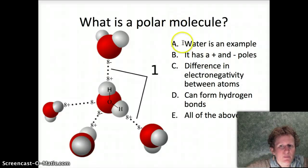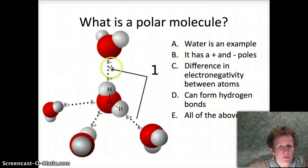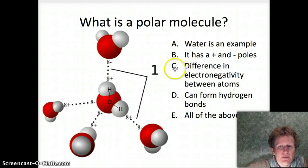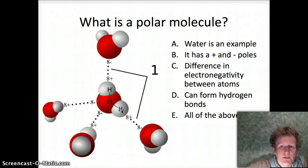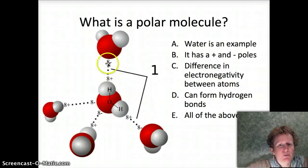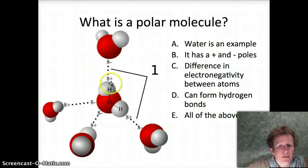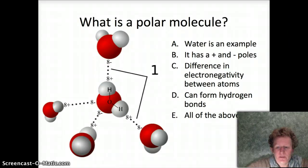Water is an example of a polar molecule — it has positive and negative poles, with a negative oxygen end and a positive hydrogen end. There is a difference in electronegativity between the highly electronegative oxygen and the low electronegativity hydrogen. They form hydrogen bonds between the molecules, not between the atoms. The bond within the molecule is a covalent bond; the bond between molecules is a hydrogen bond. So all of the above is true.